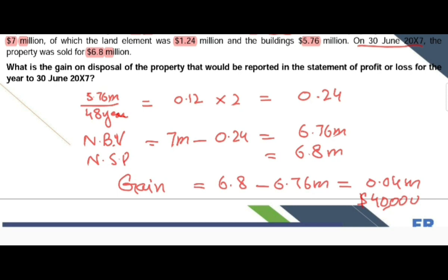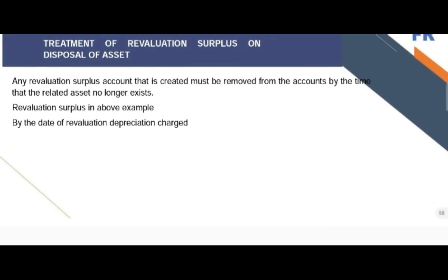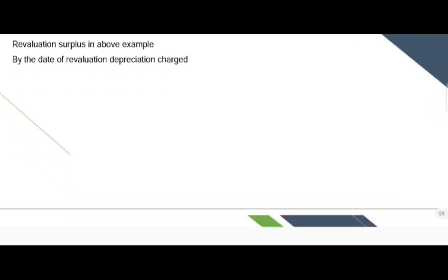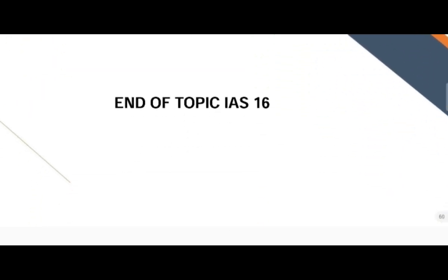This $40,000 is the gain on the sale of the revalued asset. Regarding the treatment of revaluation surplus on disposal: when disposing of any asset, all the revaluation surplus related to that asset should be transferred to retained earnings by passing the entry debit revaluation surplus and credit retained earnings. That concludes IAS-16 Property, Plant and Equipment. Please do give your feedback. Thank you.